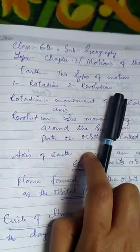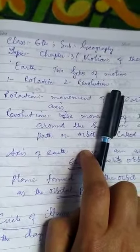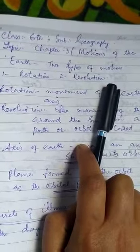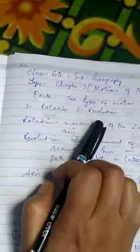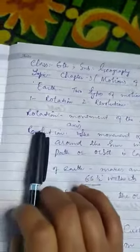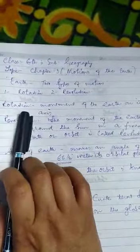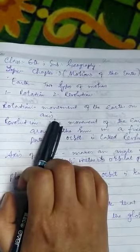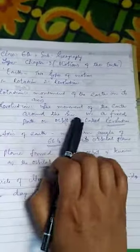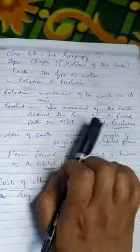Earth has two types of motions. One is rotation, second is revolution. Rotation means movement of the earth on its axis. Revolution means the movement of earth around the sun in a fixed path.